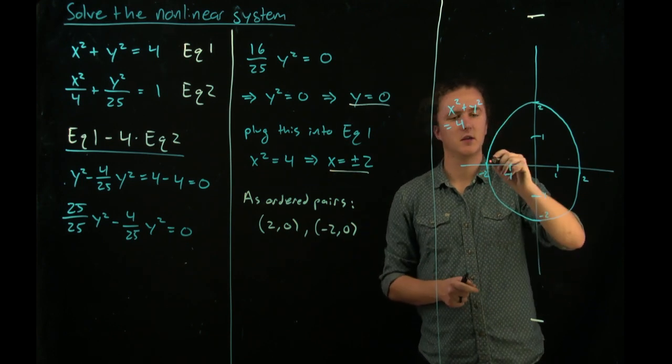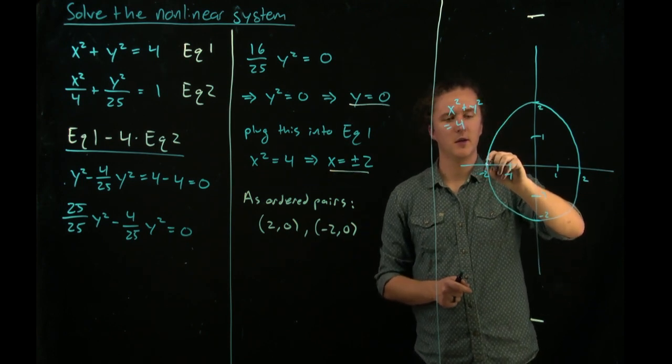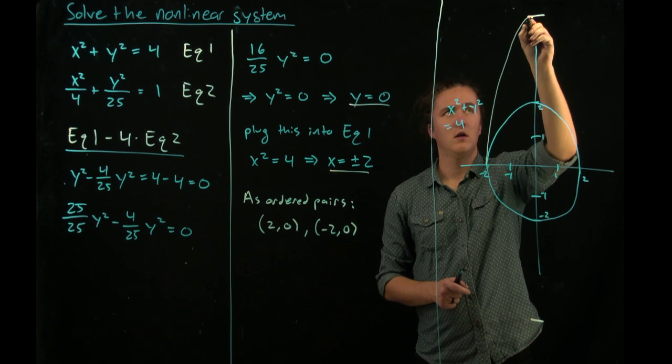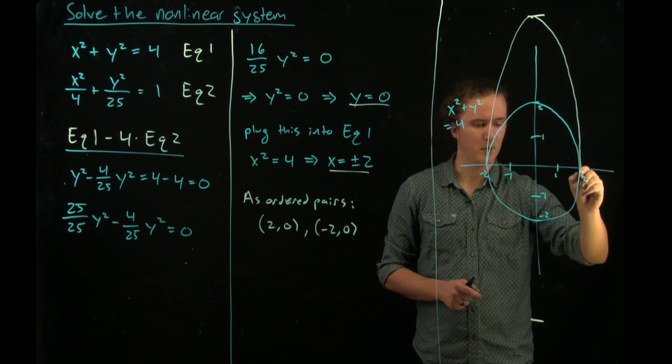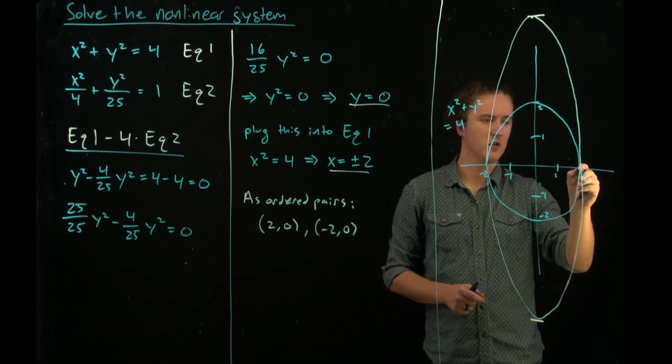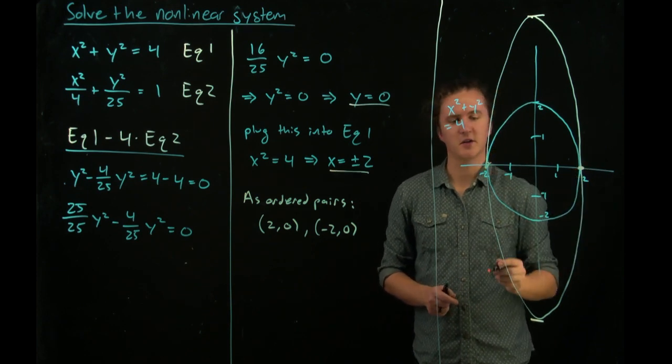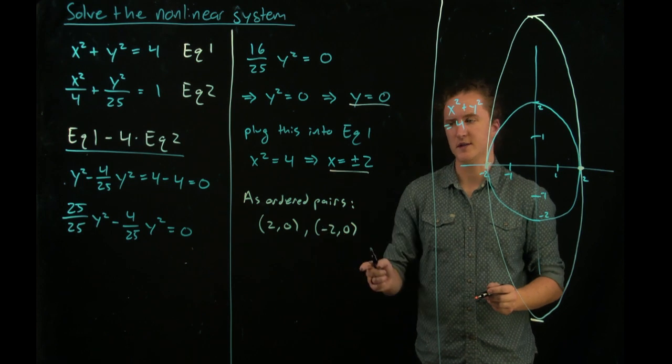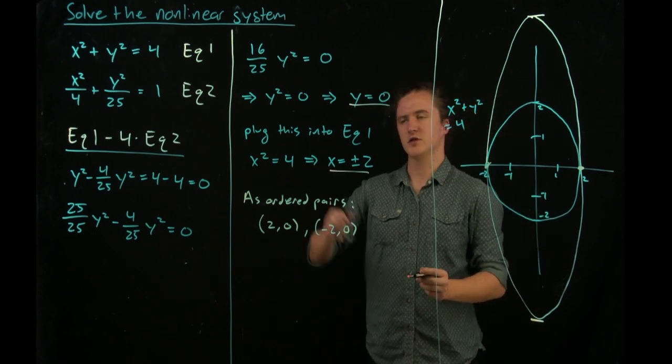Graphing this ellipse gives a shape that looks something like this. And we can find these intersection points here match exactly what we said would happen via the algebraic solution.